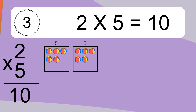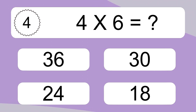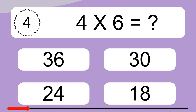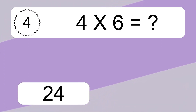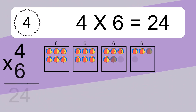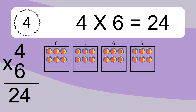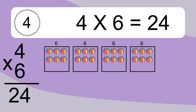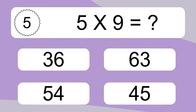This equals 10 balls. 4 times 6 equals what? 4 times 6 equals 24. We have 4 boxes and each box has 6 colorful balls inside. If you count all the balls in all the boxes together, you will have 4 times 6 balls. This equals 24 balls.